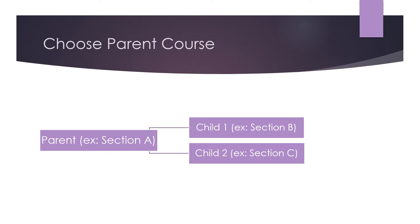Before we cross-list, we must choose one course to be the main course, or what Canvas refers to as the parent course. The other course will be the child course, or courses if there are more than two sections. In our example, we will use section A as our parent course and section B as our first child course.